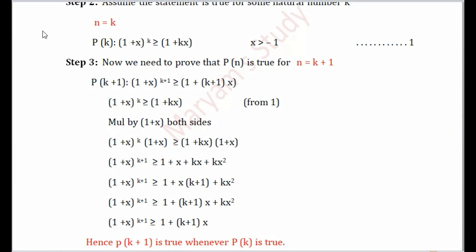In Step 3, we need to prove P(k+1) is also true, so we replace k by k+1. This gives us (1+x)^(k+1) ≥ 1+(k+1)x, which is what we ultimately need to prove. As with other inequality proofs, we take P(k) and work toward proving P(k+1). We have (1+x)^k ≥ 1+kx from step 1, but we need k+1 in the exponent.